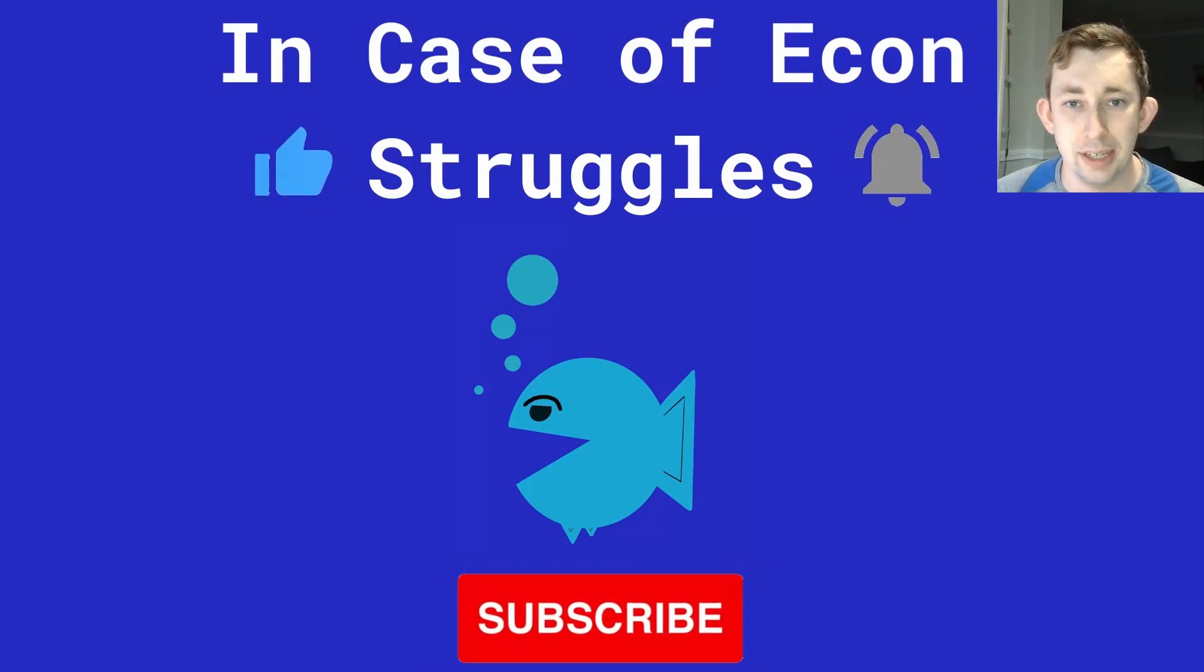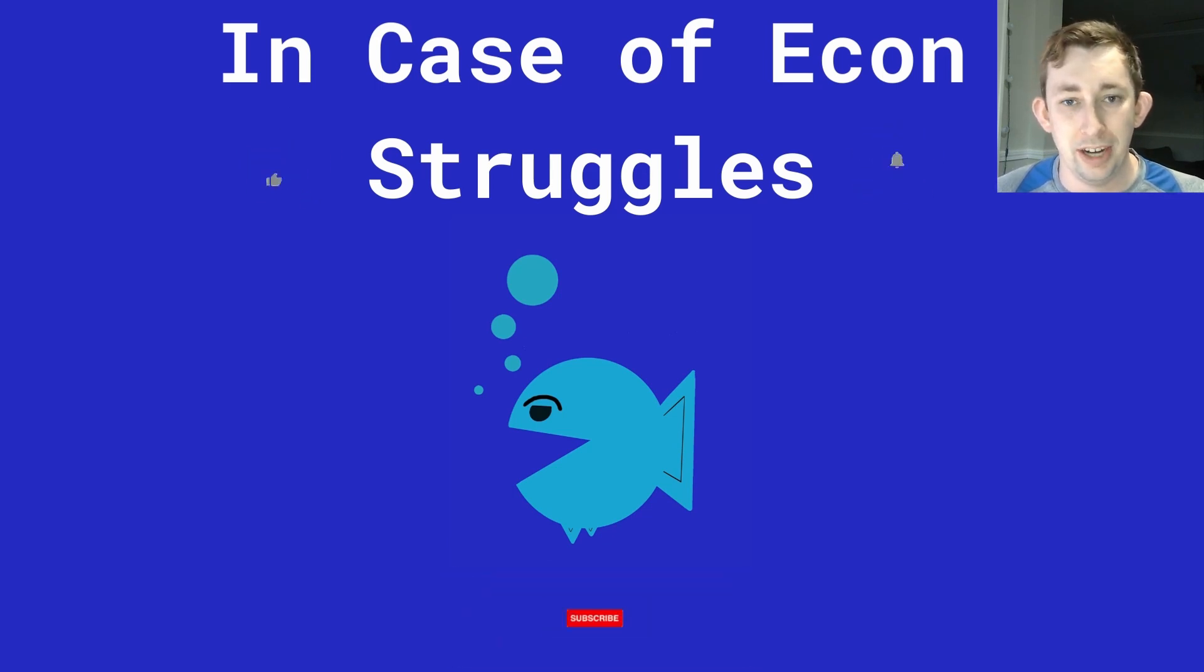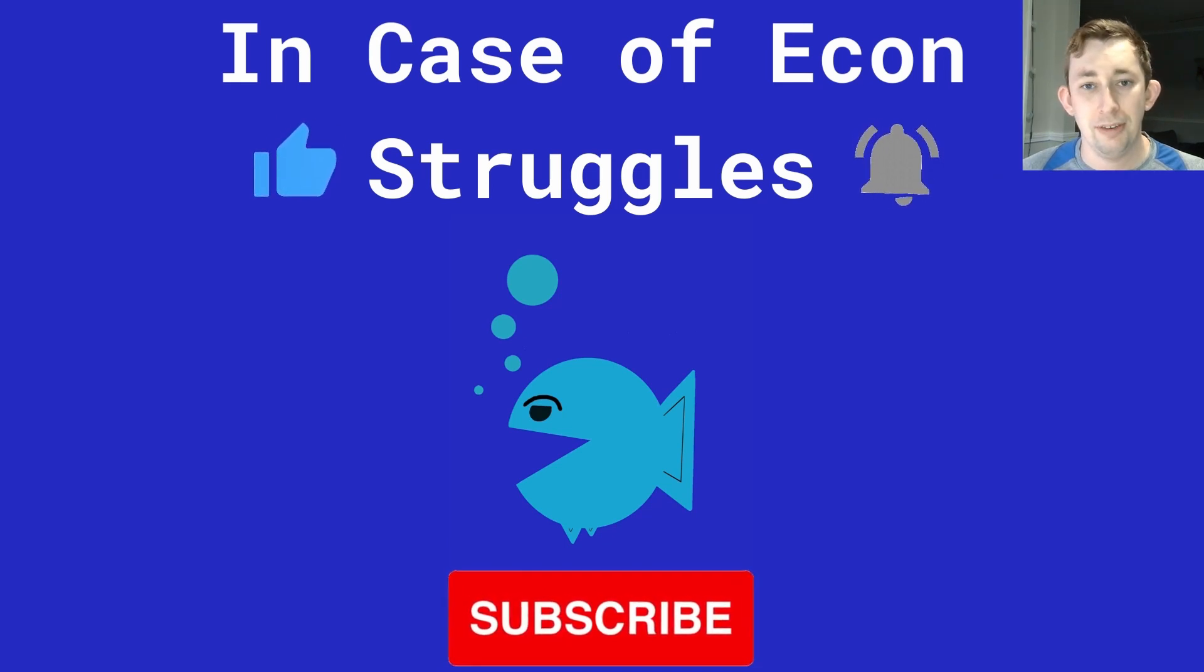Hopefully this makes sense. Just a quick video on monopsony. Now we're done with unit five. If you've got any questions about unit five or you're finding these videos helpful, leave a comment below. And if you haven't already, please like and subscribe. We'll see you next time for another case of econ struggles.